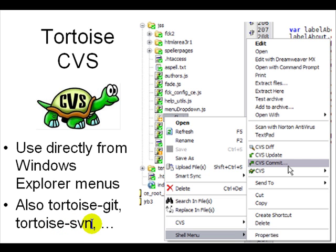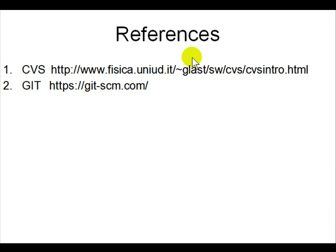So now we know how to use CVS, and you should probably use it to keep a backup of all your files on your local machine whether it's Windows or Linux. The references are to just look on Google for 'CVS intro', and also look at Git which will come in the next chapter.